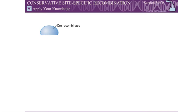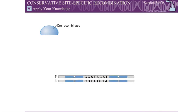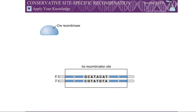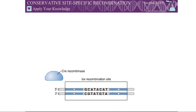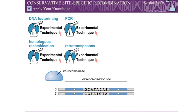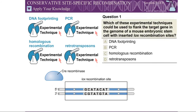Site-specific recombination is a useful tool for such studies. CRE recombinase is a well-characterized tyrosine recombinase. CRE recombinase cleaves at recombination sites called LOX sites. Question 1: Which of these experimental techniques could be used to flank the target gene in the genome of a mouse embryonic stem cell with inserted LOX recombination sites?